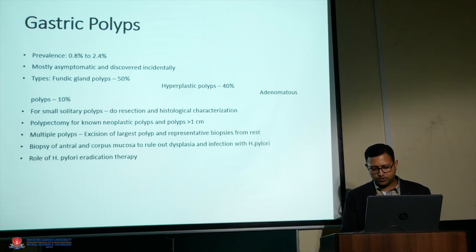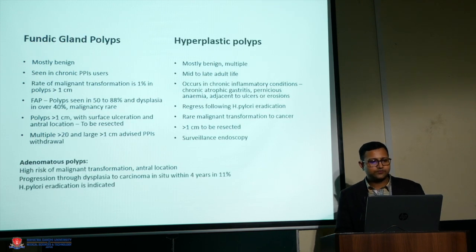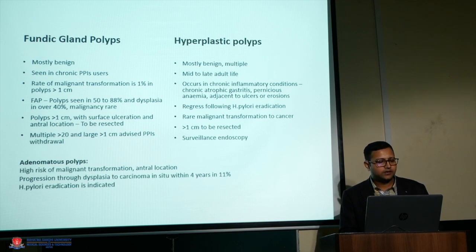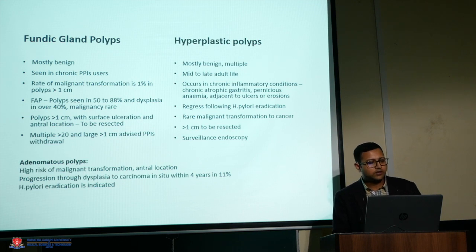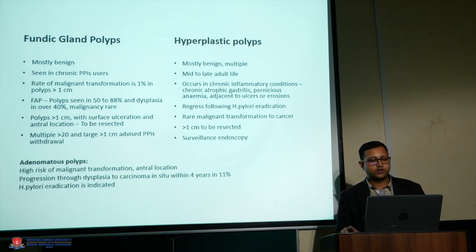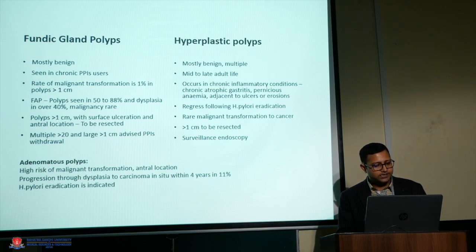Fundic gland polyps are the most common and are mostly benign. Many chronic users of proton pump inhibitors develop these polyps. The risk of malignancy is very low — less than one percent. In familial adenomatous polyposis, which primarily affects the colon, fundic gland polyps also occur, but due to genetic predisposition, there is a higher risk of dysplasia and malignancy. Larger polyps need to be resected and followed up.